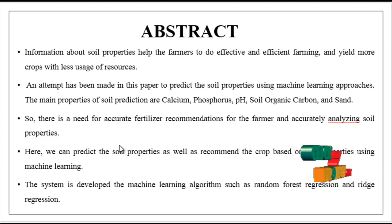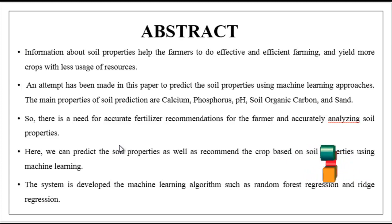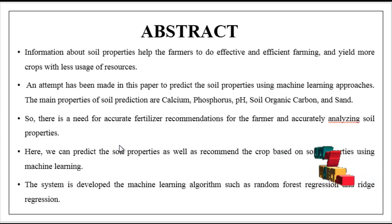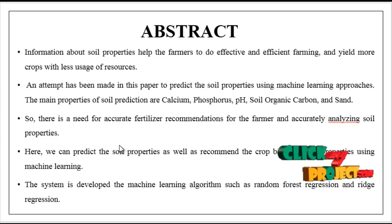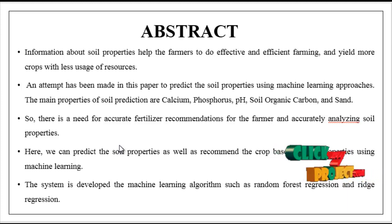The main properties predicted are calcium, phosphorus, pH, soil organic carbon, and sand. There is a need for accurate fertilizer recommendations for the farmer and accurately analyzing soil properties. Here we can predict the soil properties as well as recommend the crop based on soil properties using machine learning.